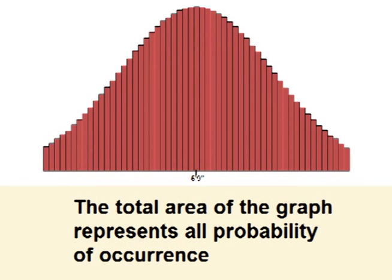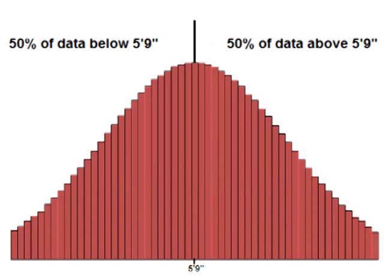We can use these graphs to make inferences about what will happen in the future. For instance, the graph shows us that there is a 50% chance that a male child will grow up to be above 5 foot 9 inches, and a 50% chance that he will grow to a height below that.